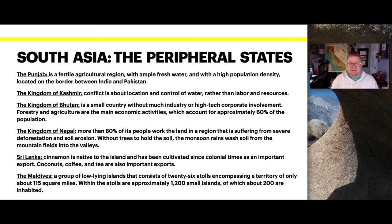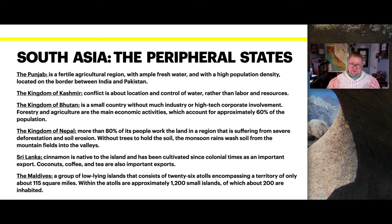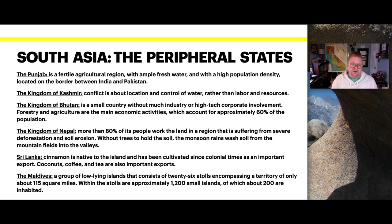There are some peripheral states of this realm. The Punjab is a fertile agricultural region with ample fresh water and high population density, located between the border of India and Pakistan. The Kashmir conflict is about location and control of water rather than labor and resources, because without water alone you cannot have agriculture, industry, or a population that can survive and grow.